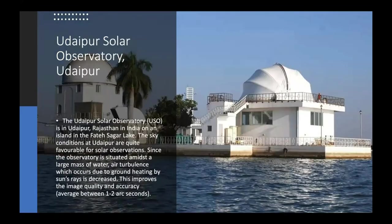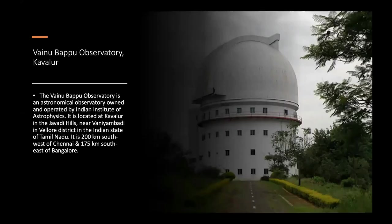We have the Kodaikanal Solar Observatory in Tamil Nadu. We also have the Udaipur Solar Observatory in Udaipur — one of the most interesting places, situated near a lake. Since the observatory is situated amidst a large mass of water, air turbulence which occurs due to ground heating by sun rays is decreased, which improves image quality and accuracy. We also have the Vainu Bappu Observatory in Kavalur — the second biggest telescope in India — an astronomical observatory owned and operated by the Indian Institute of Astrophysics, located at Kavalur in the Jawadi Hills near Vaniyambadi in Vellore district, Tamil Nadu.